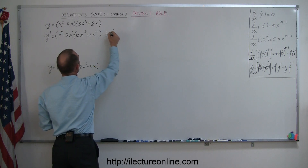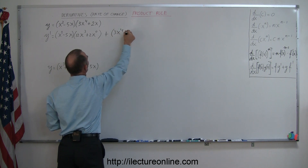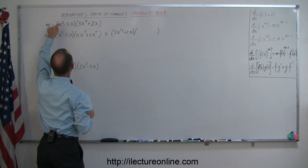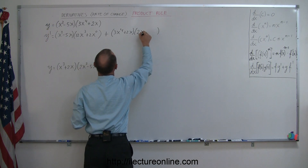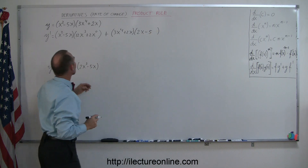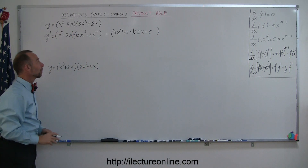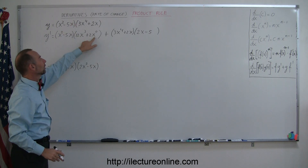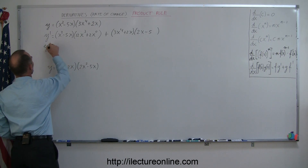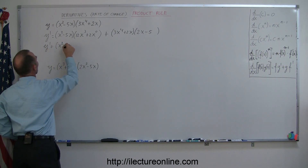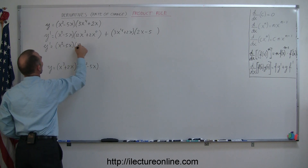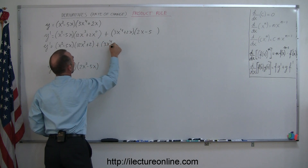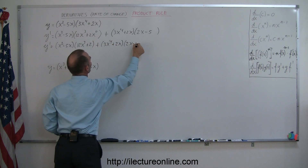Plus the second, which is 3x to the fourth plus 2x, times the derivative of the first function. That would be 2 times x to the first power minus 5. Remember, the derivative of 5x is simply 5 — the x drops out because you subtract 1 from the exponent: 1 minus 1 is 0, and x to the 0 is 1. So we can rewrite this as y prime equals x squared minus 5x, times 12x cubed plus 2, plus 3x to the fourth power plus 2x, times 2x minus 5.